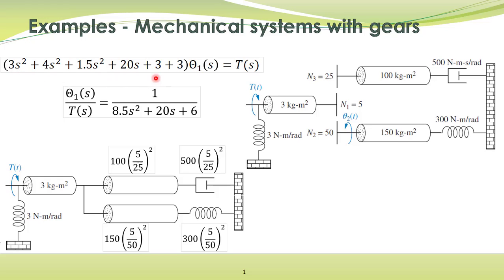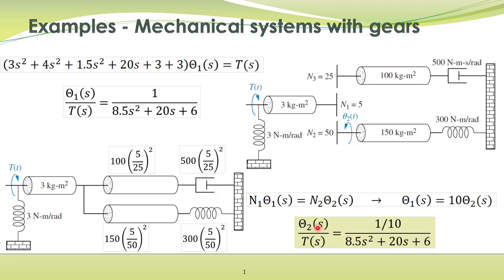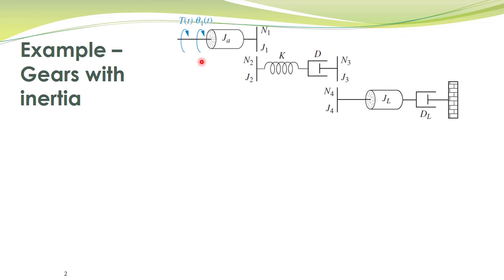By bringing terms to the right-hand side, we get the transfer function between theta one and T. We are also interested in obtaining the transfer function between theta two and T. We know the relation between theta two and theta one: they are related by the gear ratio, that is N1 times theta one equals N2 times theta two, which means theta one of s equals 10 times theta two of s. Substituting this gives us the transfer function between angular displacement theta two and the applied torque T.